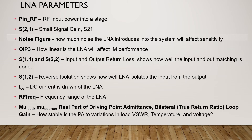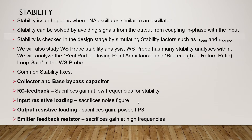ICE is the DC current drawn by the LNA. RF frequency range is the frequency range of the LNA. Mu load, mu source, and the real part of driving point admittance — bilateral through-return ratio loop gain — determine how stable the LNA is to variations in load VSWR, temperature, voltage, and input power. The stability issue happens when the LNA oscillates similar to an oscillator. Stability can be solved by avoiding signals from the output coupling in phase with the input. Stability is checked in the design stage by simulating stability factors such as mu source and mu load. We will also study WS probe stability analysis, analyzing the real part of driving point admittance and bilateral through-return ratio loop gain.